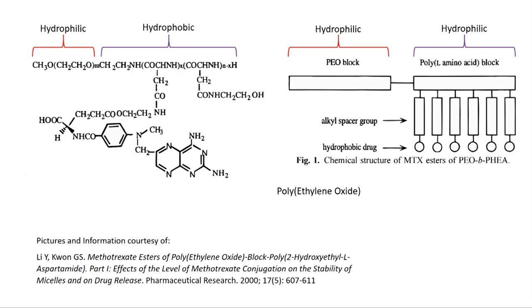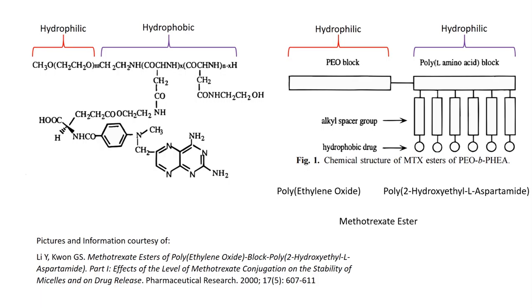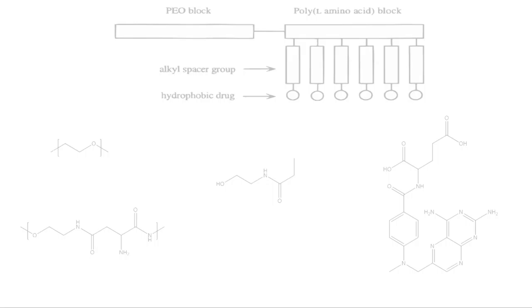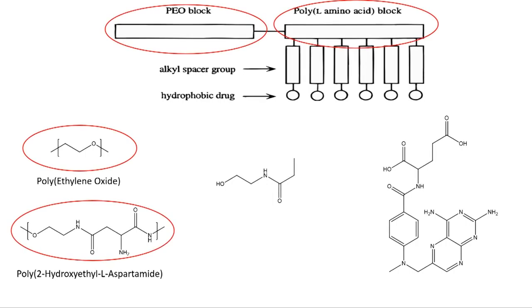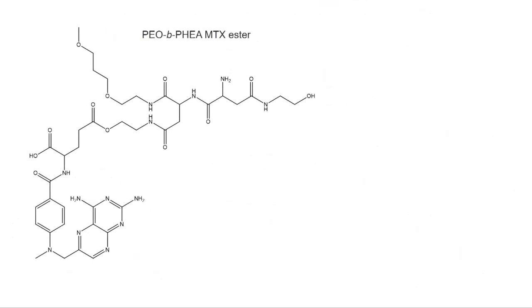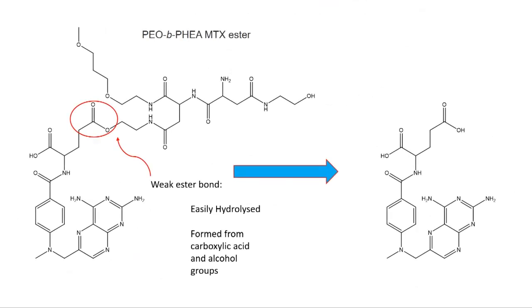The hydrophilic block is comprised of polyethylene oxide, or PEO, whilst the hydrophobic block comprises of poly-2-hydroxyethyl-L-aspartamide, abbreviated as PHEA. The hydrophobic methotrexate is bonded via an ester group and spacing unit to the PHEA chain, and thus is encapsulated inside the core of the micelle. Methotrexate is bonded to its unimer via a weak ester bond. When the micelle breaks apart and the unimers are released, a hydrolysis reaction will occur, separating the ester bond into its previous primary alcohol and carboxylic acid groups.